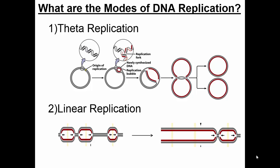When prokaryotes replicate their DNA, they undergo a type of replication called theta replication, just like the Greek letter theta. You can see that eukaryotes simply have an origin of replication, and then at that origin a replication fork forms on either side of something called the replication bubble. Replication proceeds in both directions until both replication forks meet, and then you have the whole chromosome replicated, looking like this theta structure. Eventually those two intertwined sections are separated, and you have the two completely replicated chromosomes.